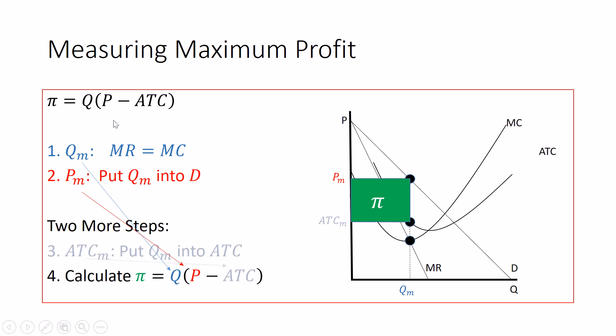Do the quantity first, then the price, then the average total cost, and you'll be good to go. In perfect competition with no barriers to entry, you can't keep that profit. But in a monopoly, you can. I'll have more videos comparing perfect competition and monopoly in a little bit. But I think for today, that's all I got. So thanks for watching, guys. Good luck and happy econ-ing.